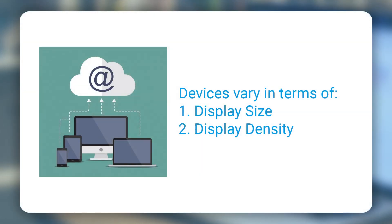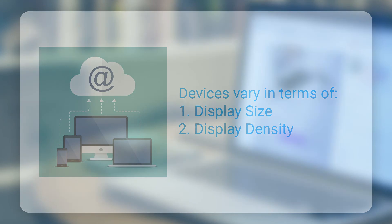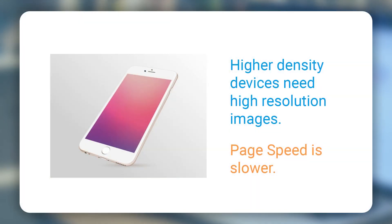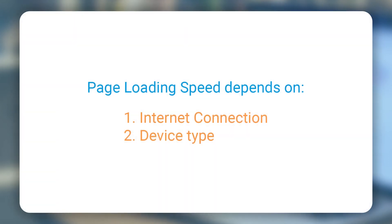Different devices vary in terms of size and also display density. Display densities are low for some smartphones while for iPhones they are higher. The ones with lower display densities don't require high resolution images, but those with higher display densities need high resolution images, which increases the loading time of the page. This means page loading depends not only on the internet connection but also the type of device the page is being loaded onto.